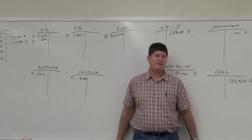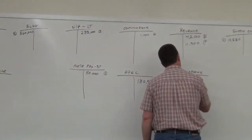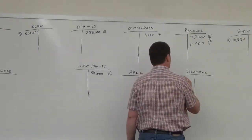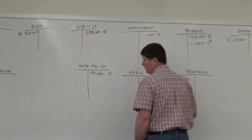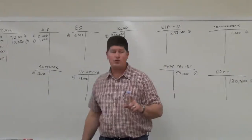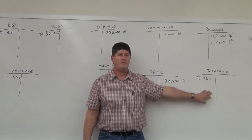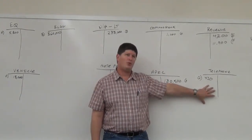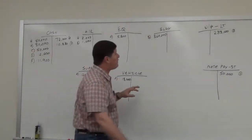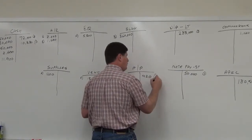Item G: Received a $420 telephone bill for March, to be paid in April. Telephone expense is a debit for $420. We haven't paid it yet, so we don't reduce cash. Since we need a credit to balance the debit, and it's not cash, it must be accounts payable — a liability. We owe $420 for the phone bill next month.